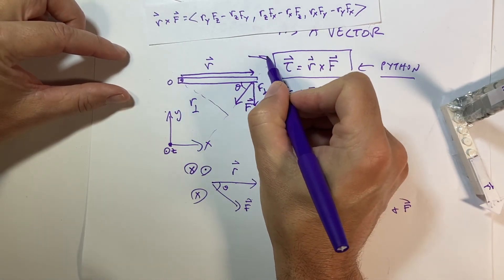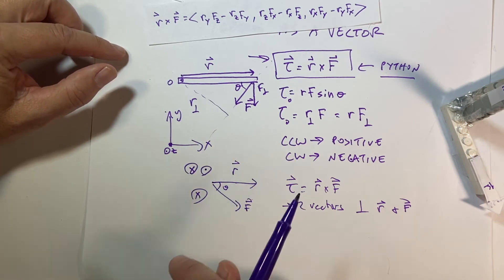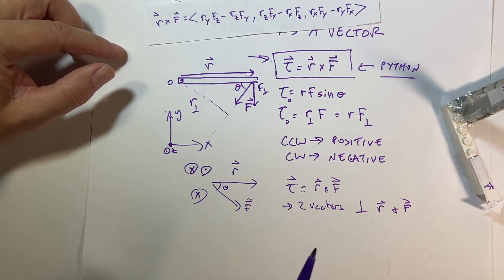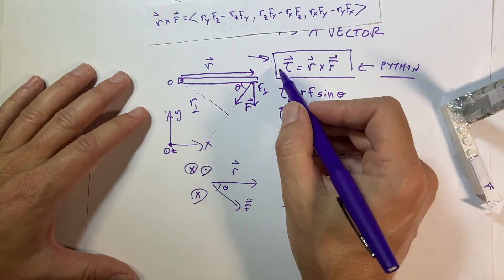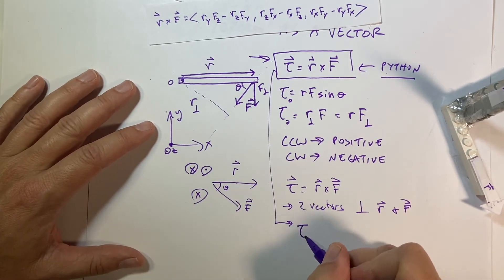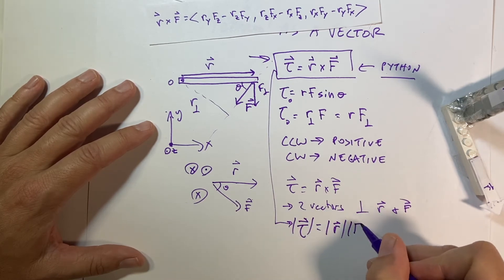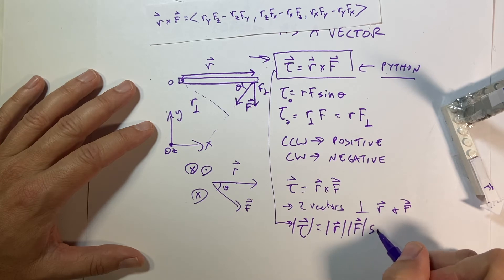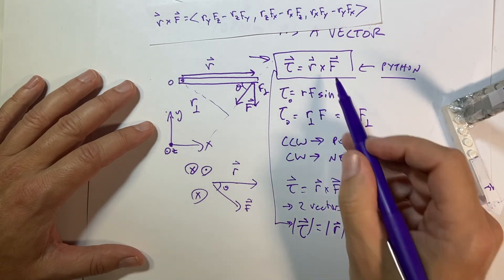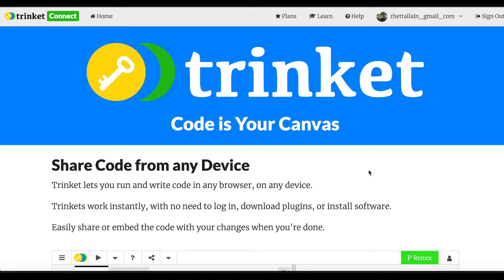Torque is indeed a vector, and I'm going to show you how to calculate cross products in Python. The magnitude of the torque equals the magnitude of r times the magnitude of f times the sine of the angle between them. We can do it both ways and check — that's what I'll show you in Python.